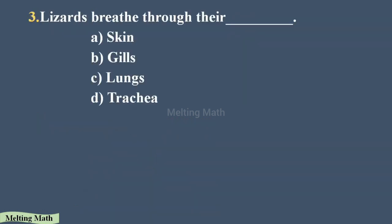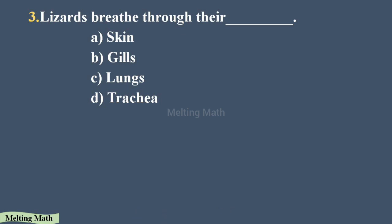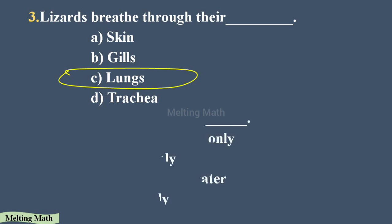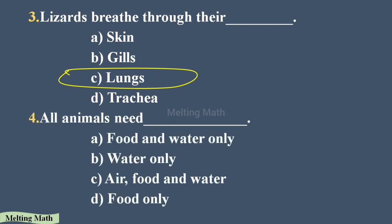Question three: lizards breathe through their dash. As we discussed in the previous video, lizards breathe through the lungs, so option C is the correct answer. Question four: all animals need dash. Options are food and water only, water only, air food and water, or food only. Option C is the correct answer because all animals need air, food, and water.